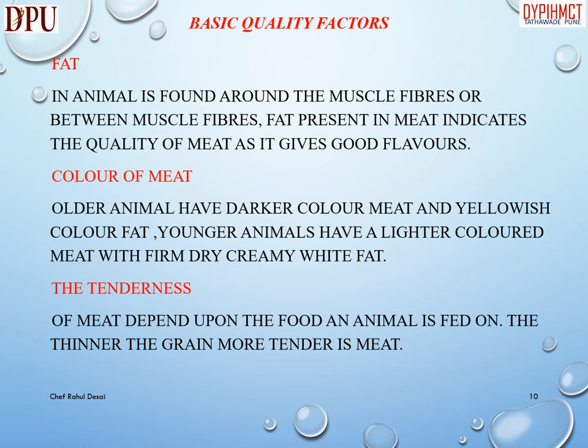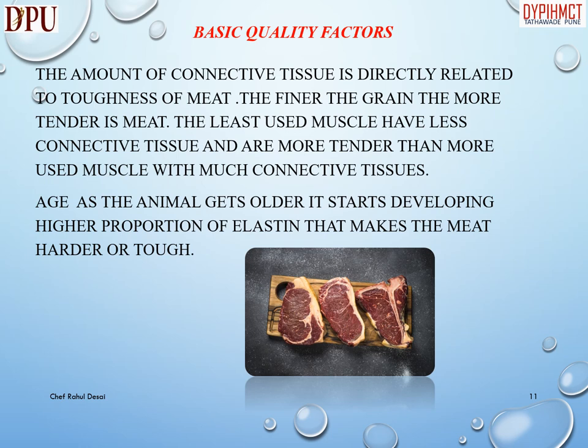Basic quality factors: fat in an animal is found around or between muscle fibers, and fat present in meat indicates the quality of meat as it gives good flavor. Color of meat: older animals have darker colored meat and yellowish colored fat, while younger animals have lighter colored meat with firm, dry, creamy white fat. The tenderness of meat depends upon the food an animal is fed on. The thinner the grain, the more tender the meat. The amount of connective tissue is directly related to the toughness of meat.